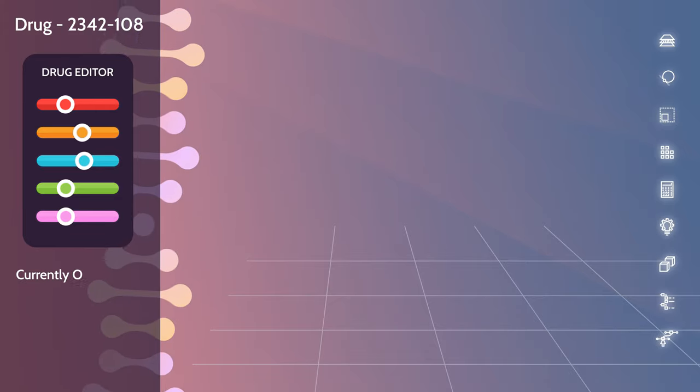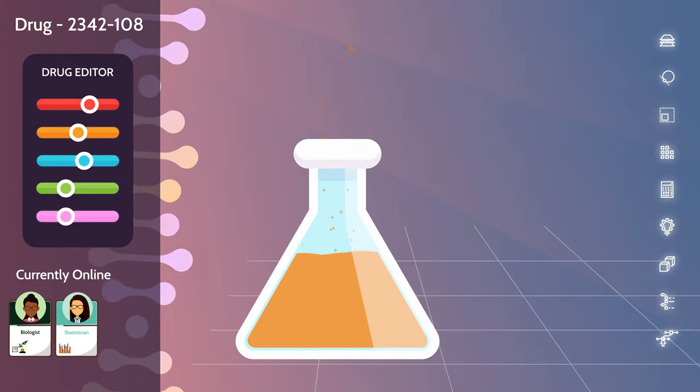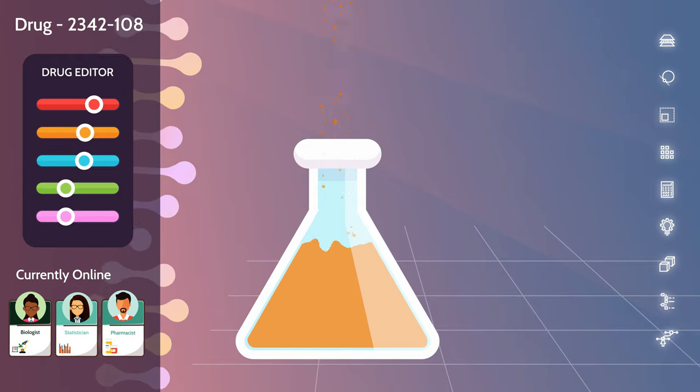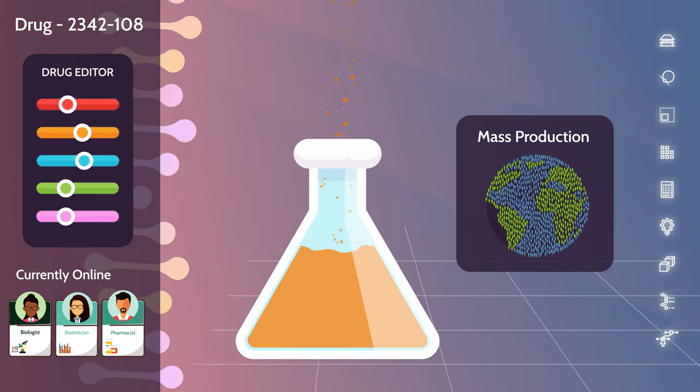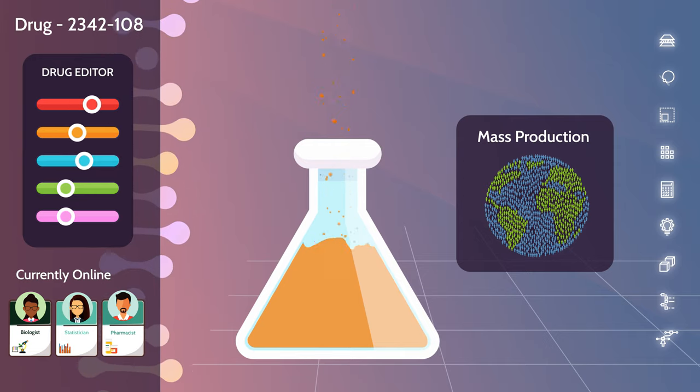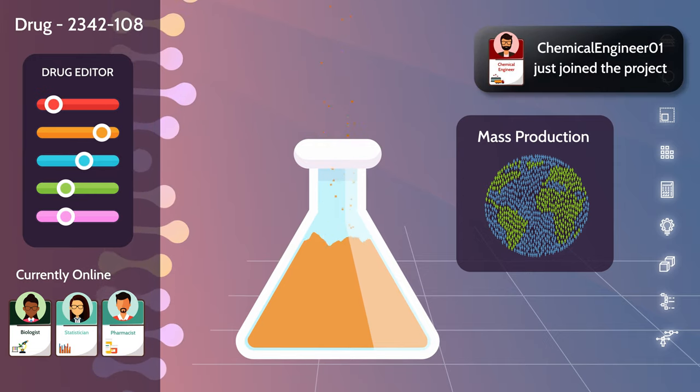Welcome to the pharmaceutical industry. As you would expect, biologists, statisticians and pharmacists are at the front line designing the drugs for trials and testing. Now, when this goes into mass production, when billions of people around the world need it, chemical engineers are here to save the day.